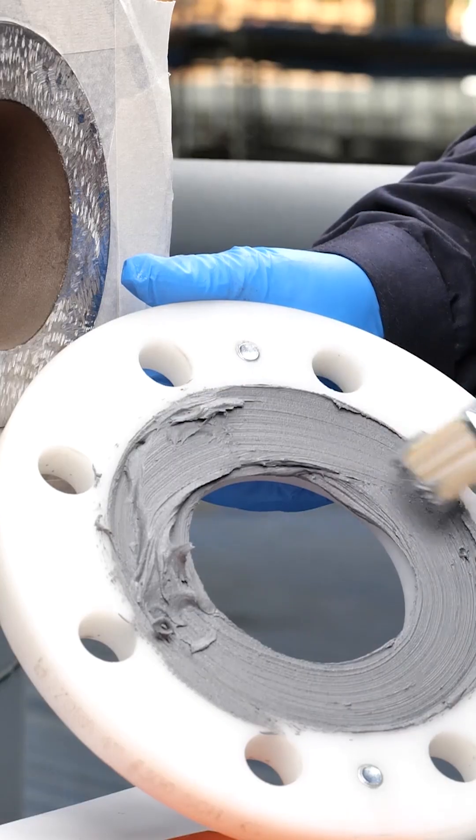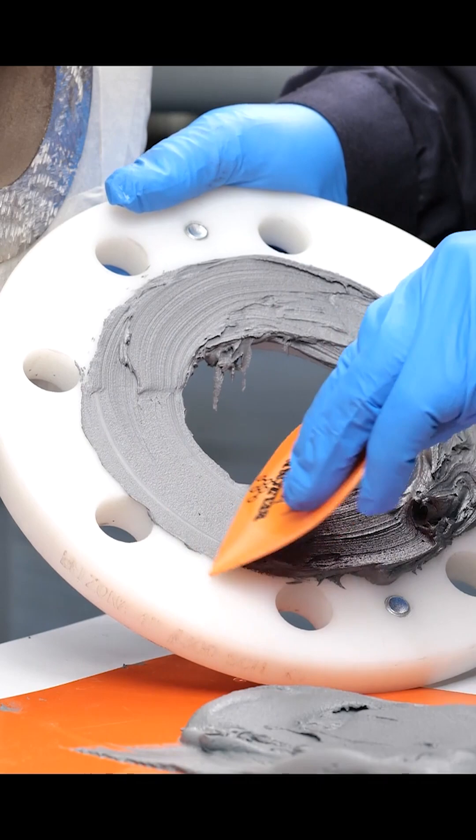Apply the mixed material to the serrations in the former. Smooth out using a Belzona applicator.